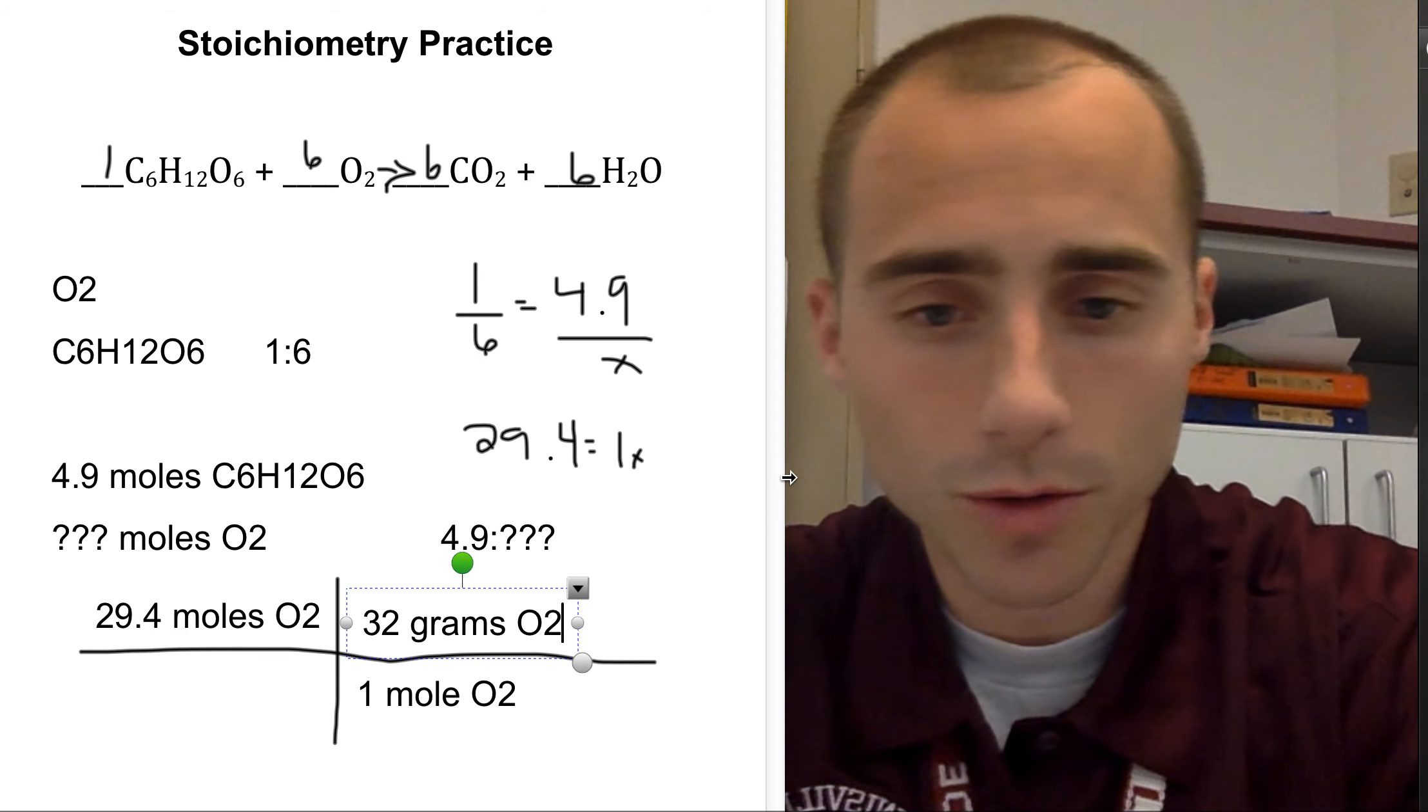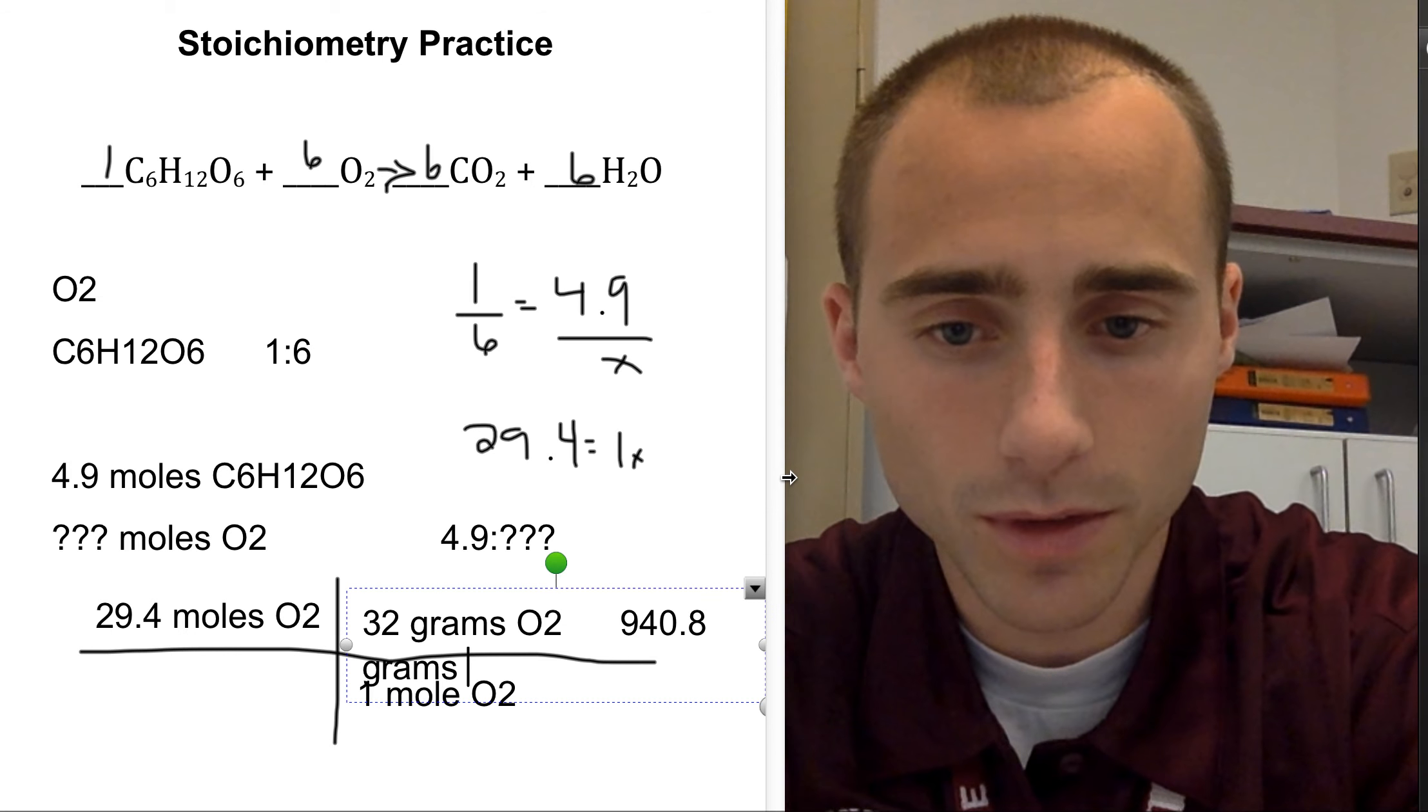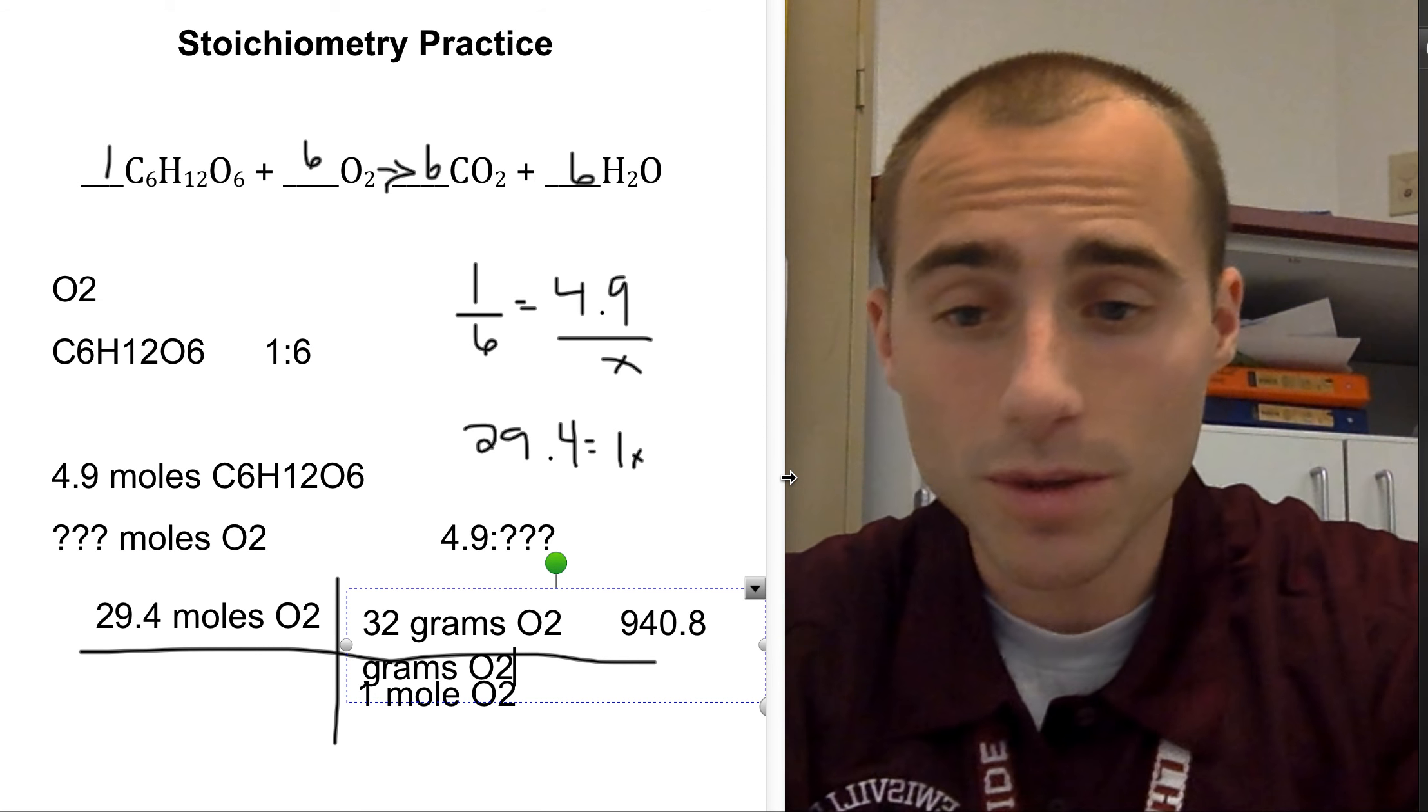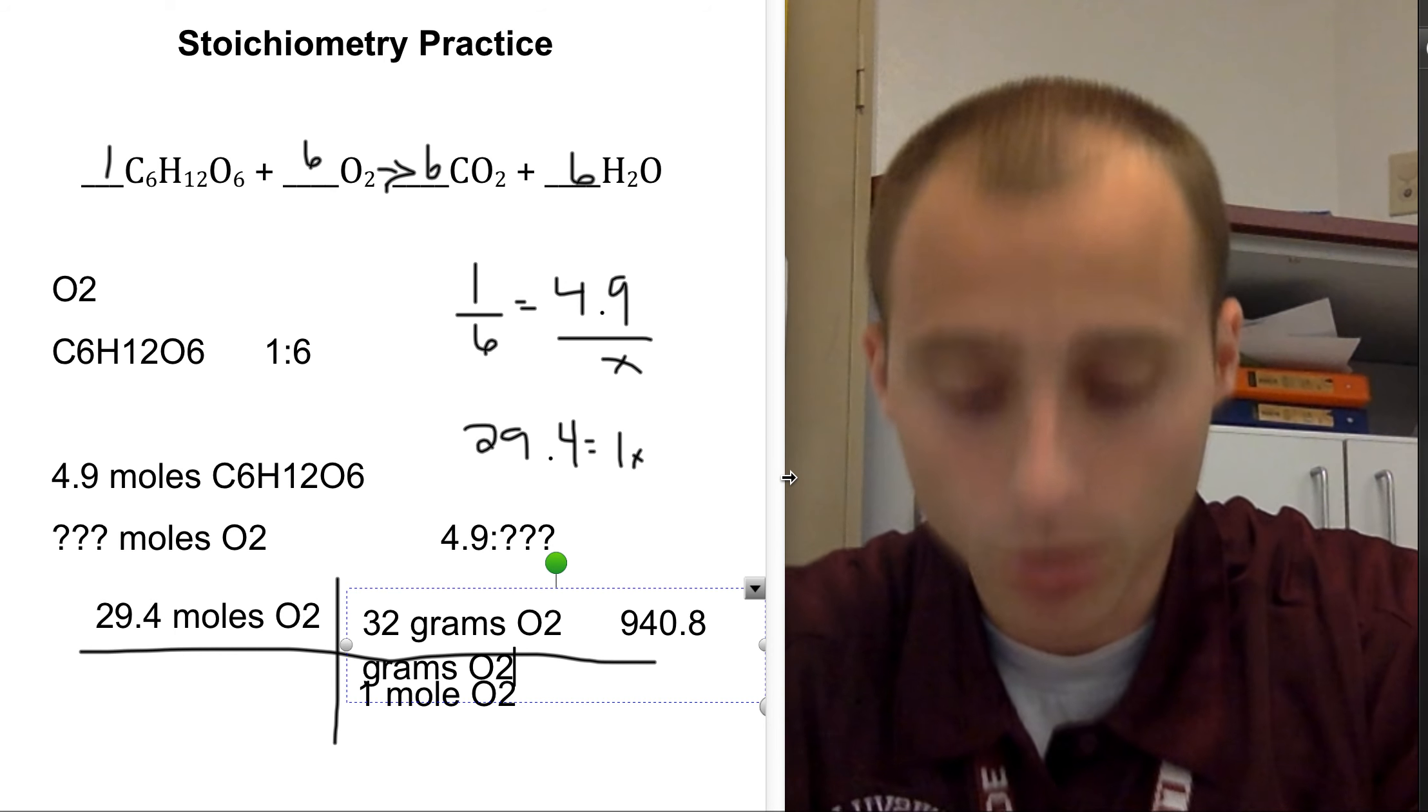You end up with 29.4 multiplied by 32, which is 940.8 grams of O2. Sorry, it went down like that, but you get the picture. You have to have 940.8 grams of O2 to oxidize 4.9 moles of glucose.